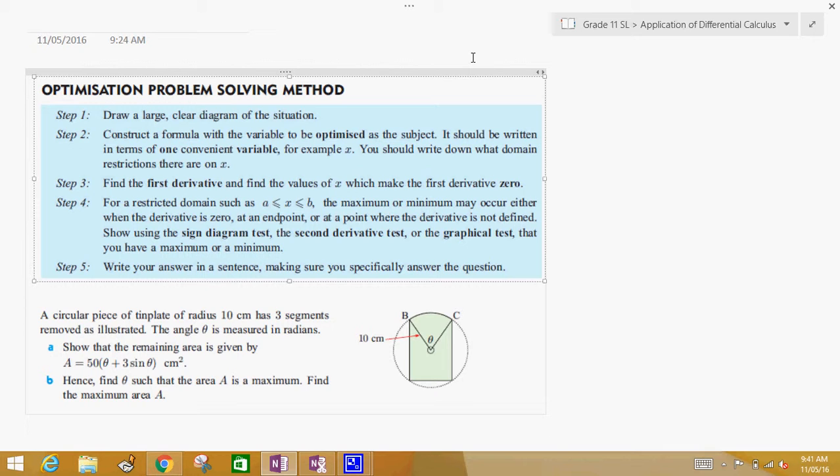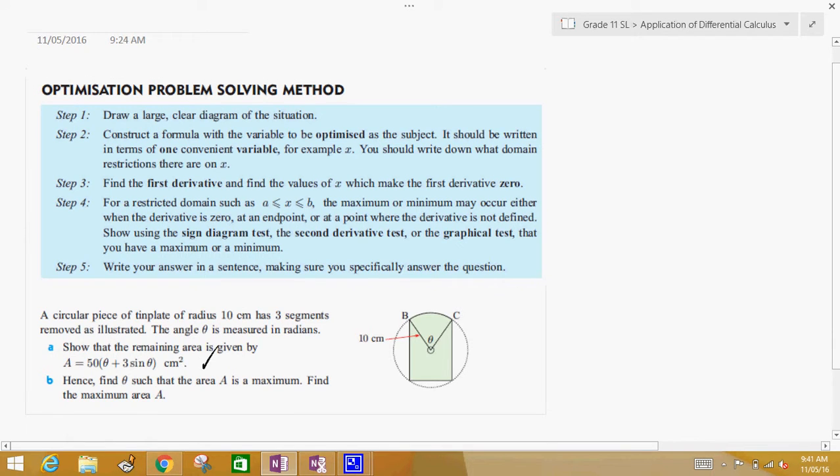I've got a circular piece of tin plate of radius 10 centimeters, has three segments removed as illustrated, and the angle is measured in radians. Show that the remaining area is given by... Well, we're going to skip this question. I'm assuming that the answer is correct, that area is equal to 50 times theta plus 3 sine theta. Part B, hence find theta that's a maximum. We're trying to find a maximum point of this area.